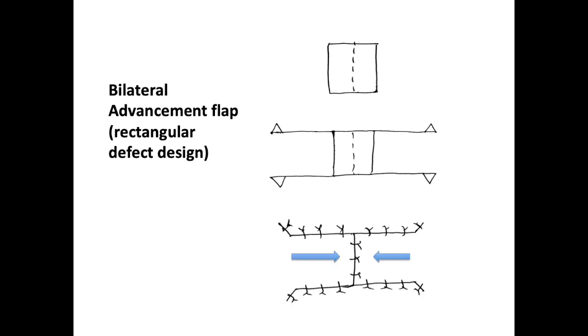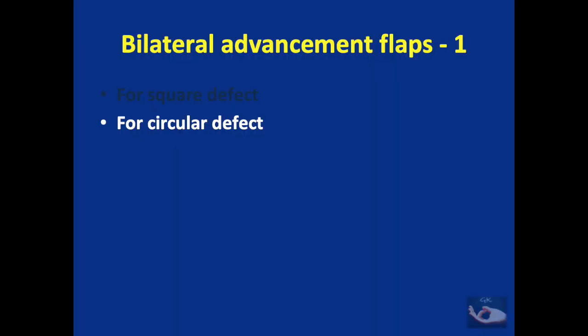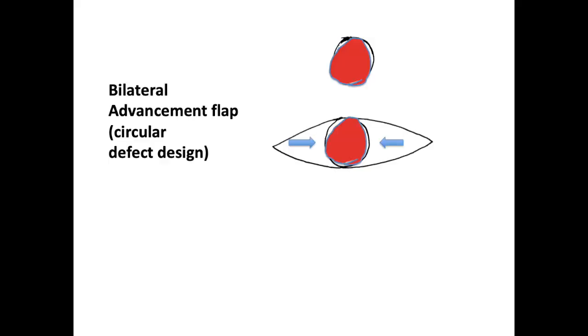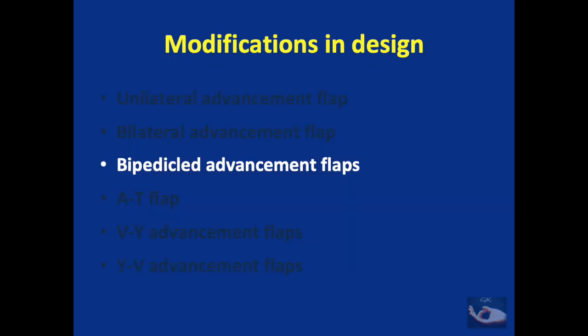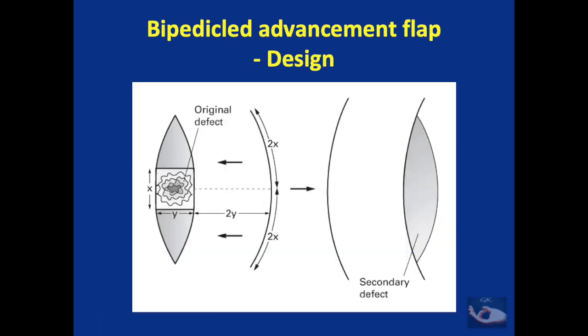Advancement flaps are planned for each of these two rectangular defects and advanced — the final suture line is like this. Advancement flaps can also be planned for circular defects. Flaps from both sides in the form of V can be advanced and this will be the final suture line. Such bilateral advancement flaps can typically be planned for defects on the forehead, especially central defects. Advancement flaps can also be designed to be bipedicled.